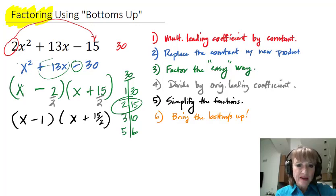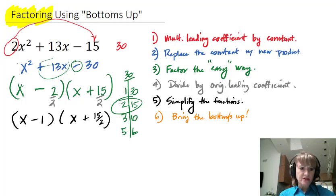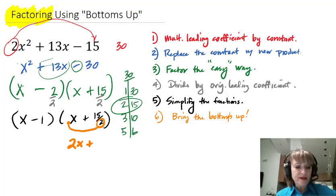Now for the bring the bottoms up, I'm going to go ahead and take my 2 and bring it around and put it in front of the x. So there's 2x plus 15, and then this is just x minus 1.